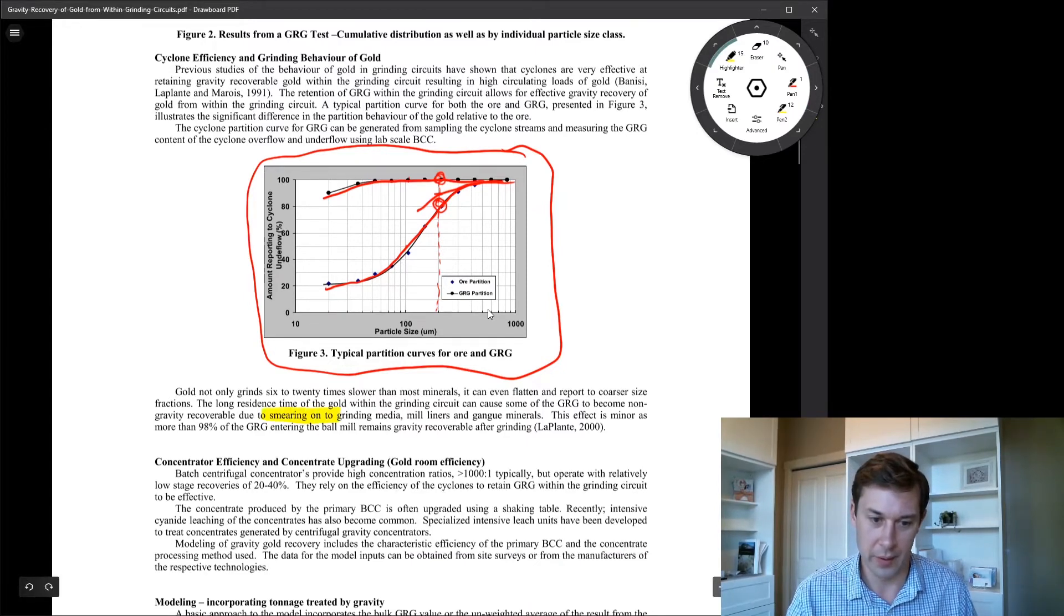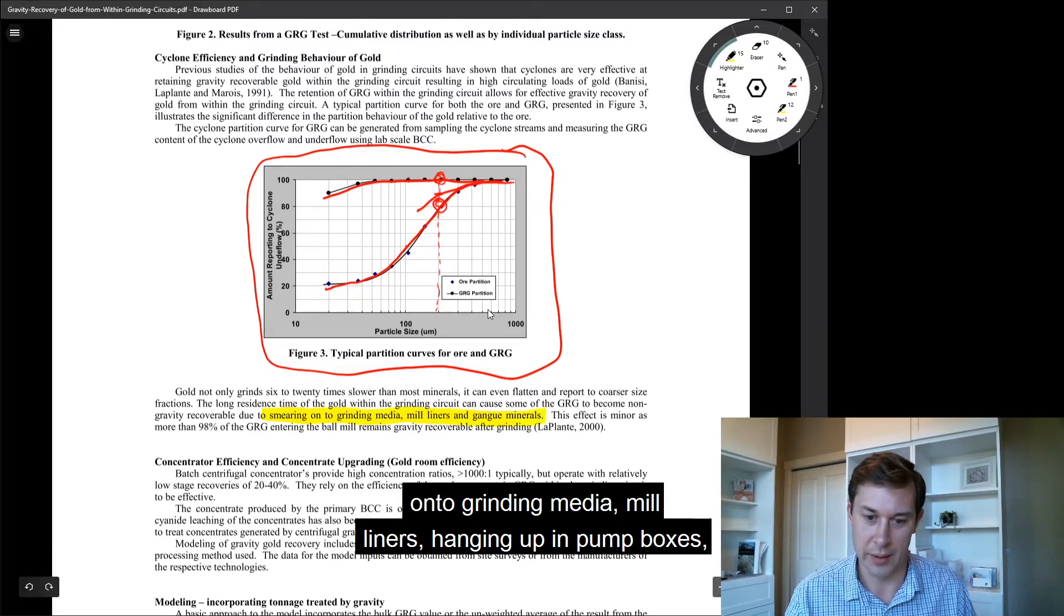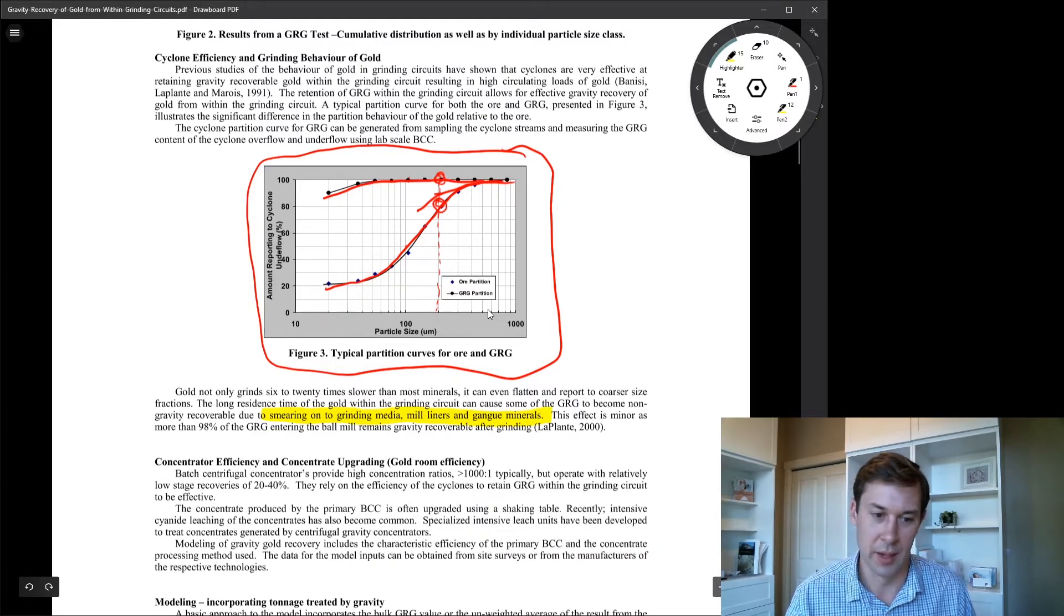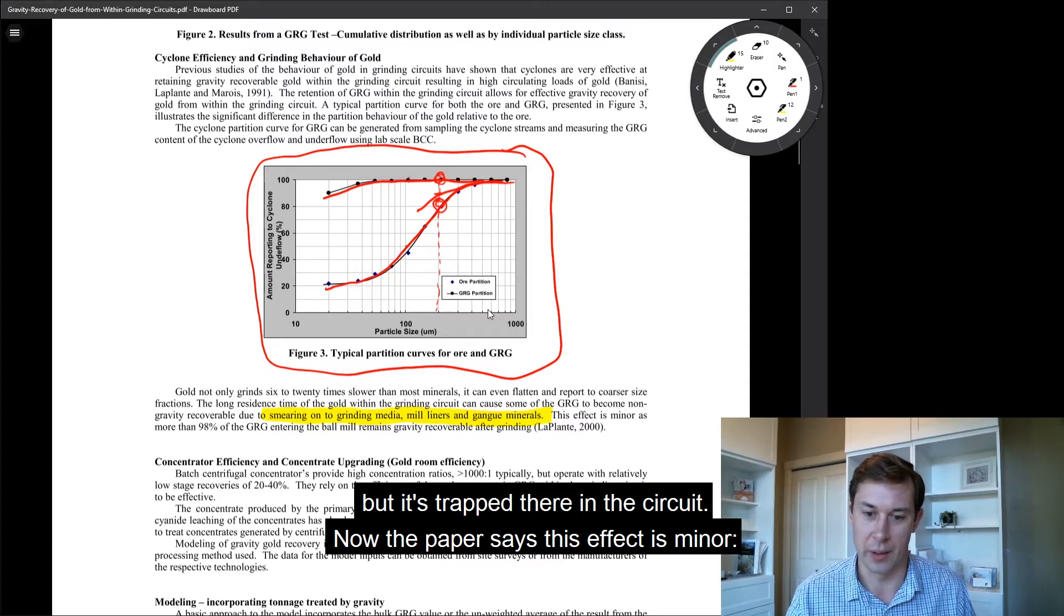Then all you're up against is gold getting smeared onto grinding media, mill liners, hanging up in pump boxes, but it's trapped there in the circuit. Now the paper says this effect is minor.